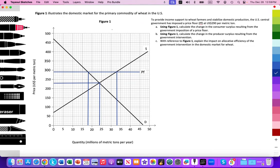So let's go ahead. On a paper three, you could be provided a model like we have here with values on the x and y axis. Here we have figure one, it illustrates the domestic market for the primary commodity of wheat in the United States. And we noticed on the y axis, we're measuring price in US dollars per metric ton. And on the x axis, we're measuring the quantity in millions of metric tons per year.